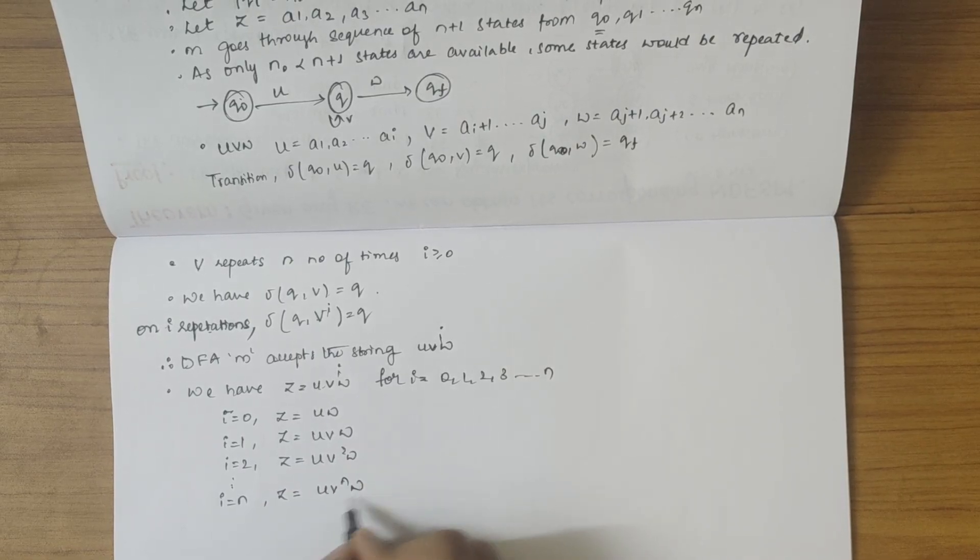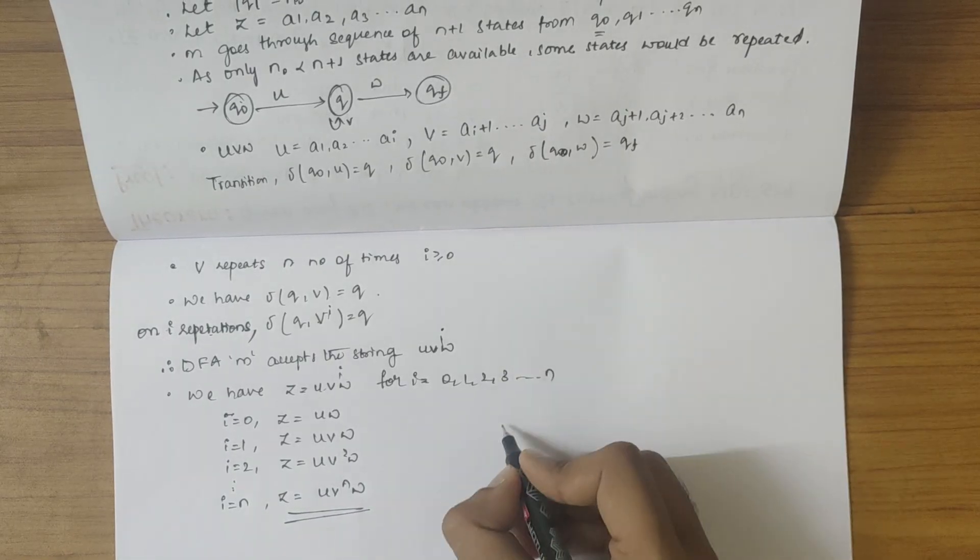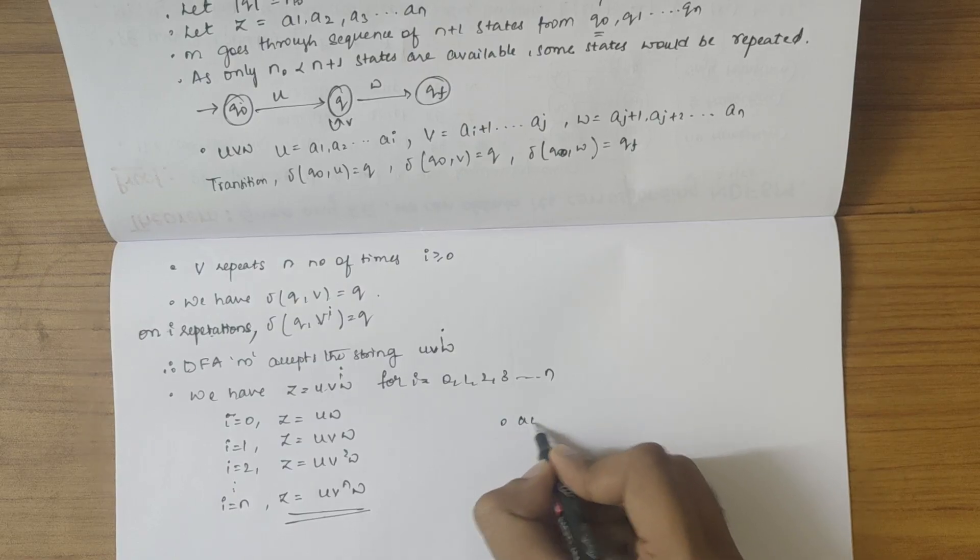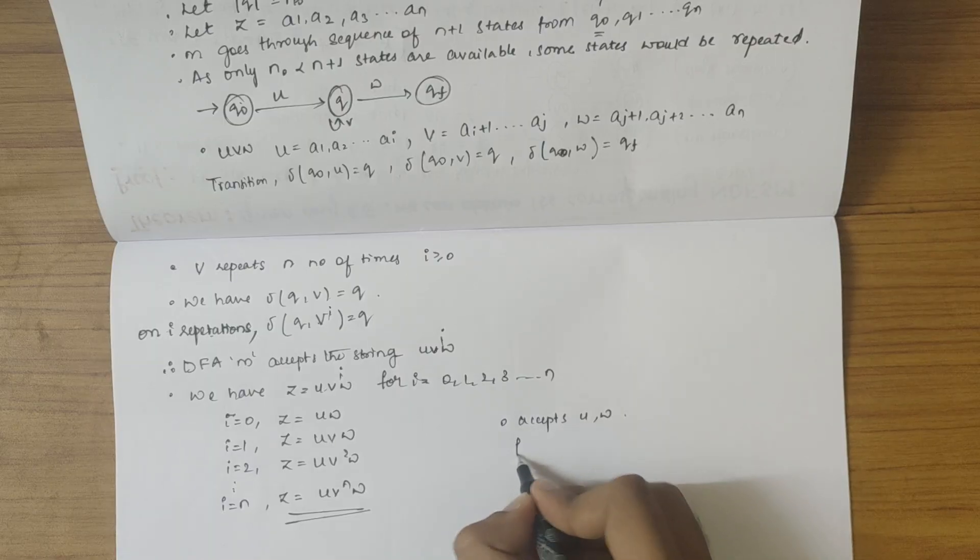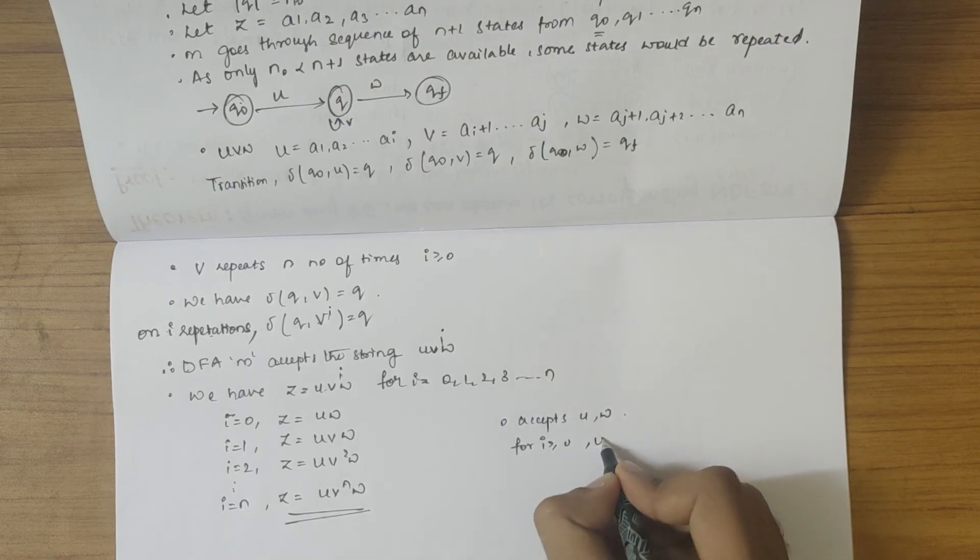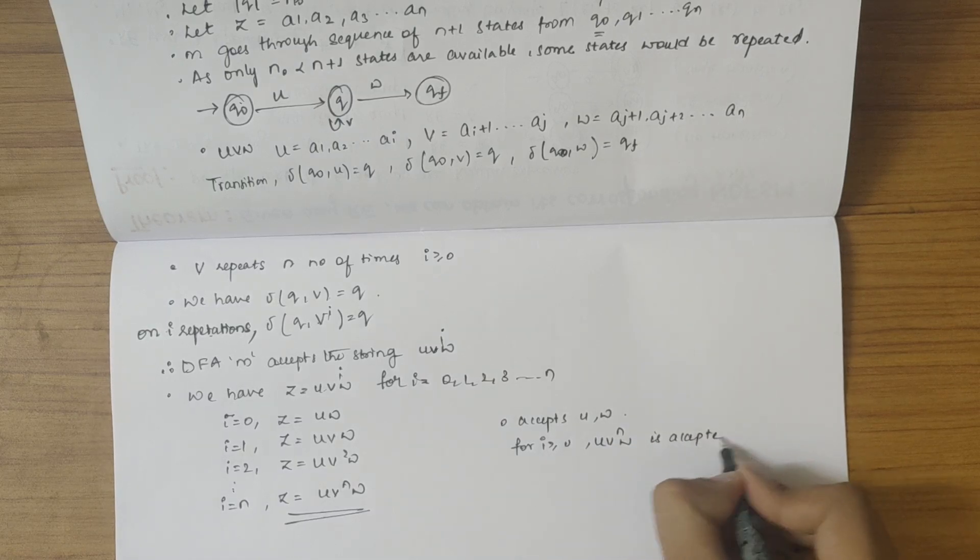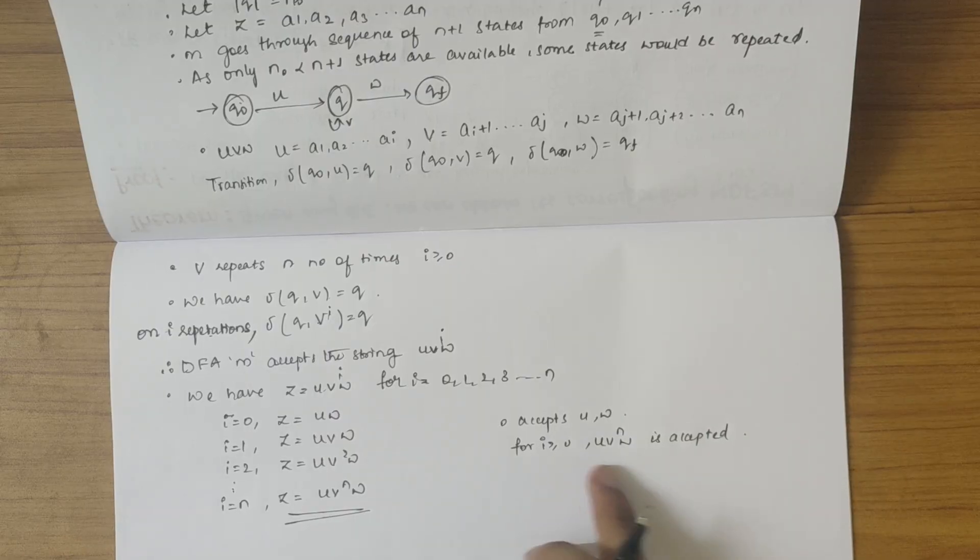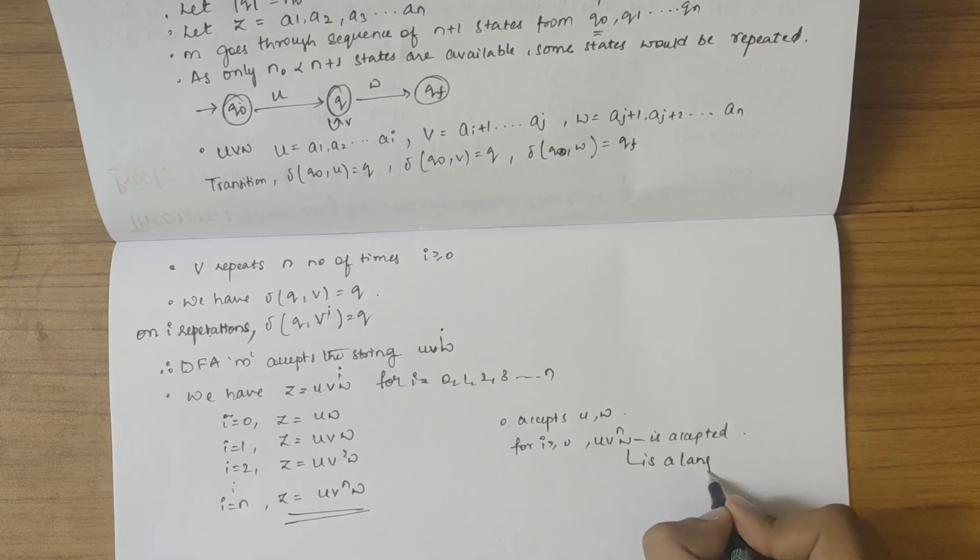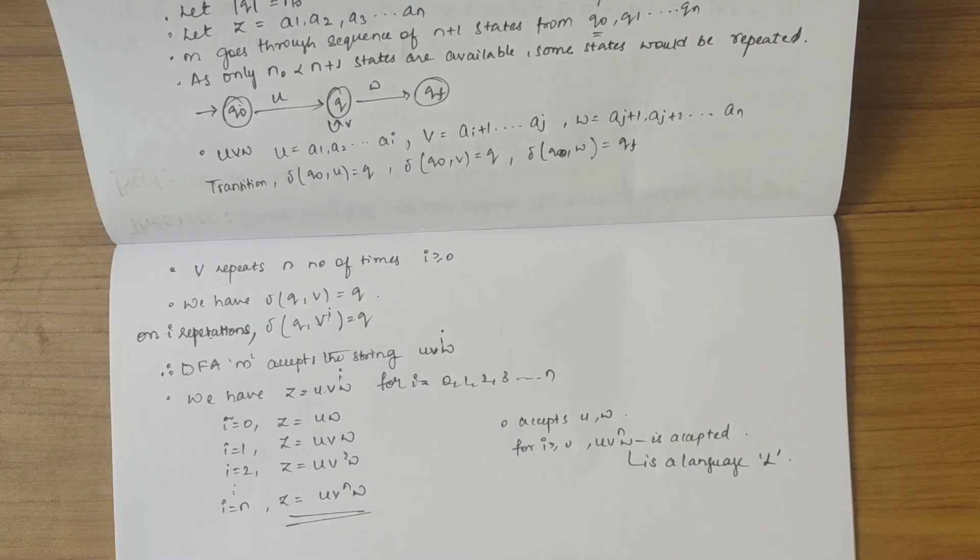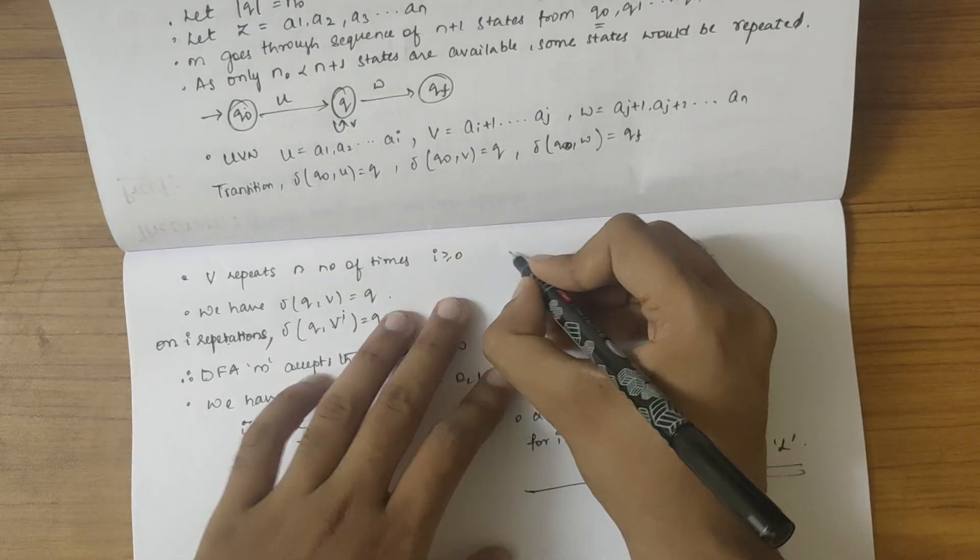So we can conclude that the automata accepts u and w. So for i greater than or equal to 0, u v power i w is accepted. So u v power n and w is in language L. So we have proved.